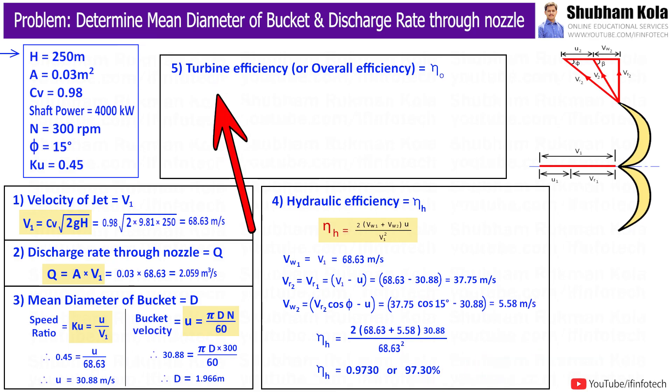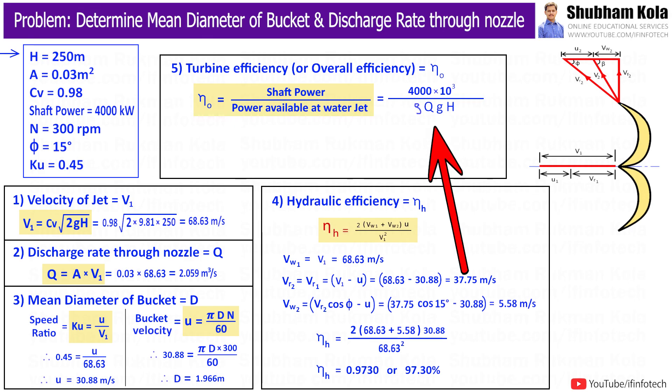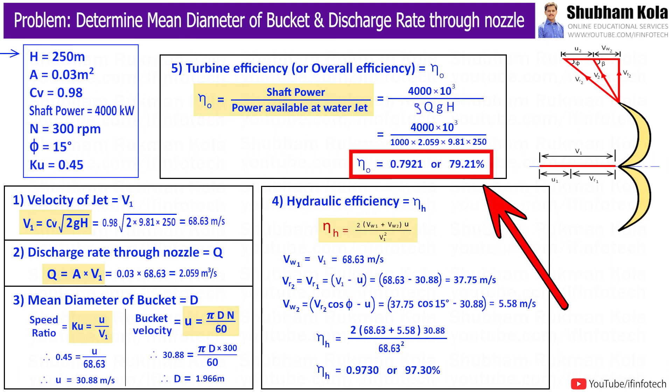Now at the end, turbine efficiency, or overall efficiency, is given by formula shaft power divided by power input, i.e. ρgQH. So here we have all the values, and density of water is 1000. So, by calculating, this will give me the value of turbine efficiency as 0.7921, or 79.21%.